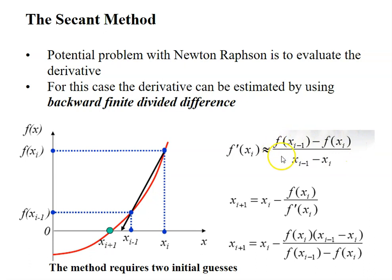So what you do is you just substitute this into this Newton-Raphson formula and you will get the secant method formula. So this is the final formula that you will be working with.